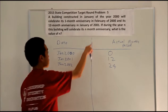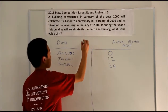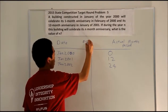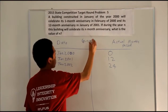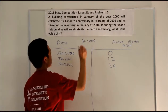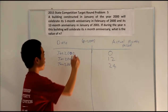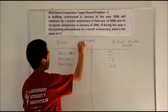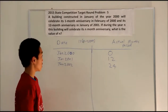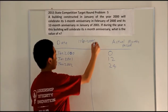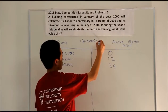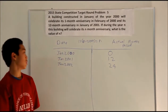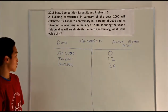We can derive the equation N minus 2000, which gives you the number of years, and you multiply that by 12 because there are 12 months in each year. That equals the total number of months passed.